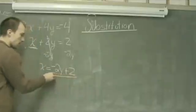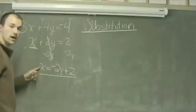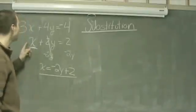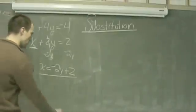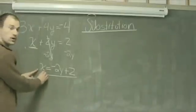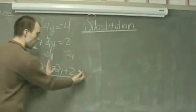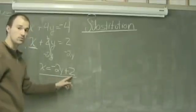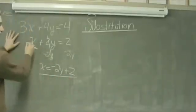At this step, now that I have this simplified, I will substitute this x value from the second equation into my first equation. So everywhere I see x, I will substitute it with the quantity negative 2y plus 2.